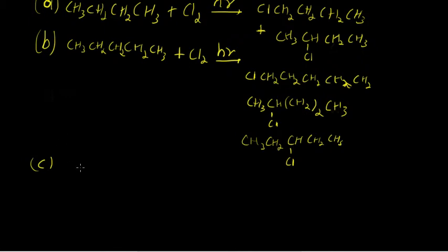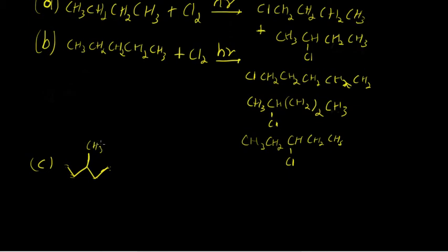Say instead of pentane we had 3-methylpentane. There are a number of possibilities. We could have chlorination at either of the two equivalent terminal carbons, or at either of the two equivalent carbons C2 and C4. We could have chlorination at the tertiary carbon, or at this primary methyl carbon. Note that this primary carbon is not equivalent to the two outer primary carbons — it is one carbon away from the branch point, while the outer carbons are two carbons away. So there are four possibilities here.